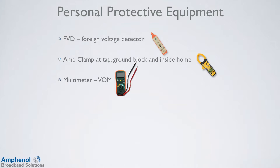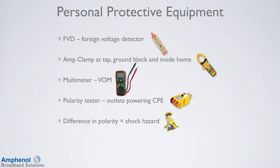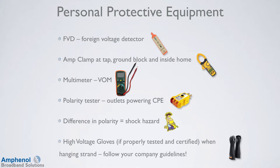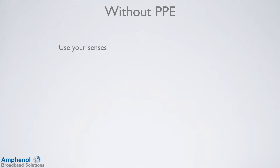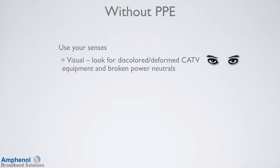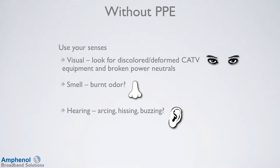A polarity tester can be used at outlets before plugging in CPE to ensure the outlet is wired correctly and there is no difference in potential which can cause a shock hazard. High voltage gloves, if properly tested and certified, can be used when hanging strand. High voltage gloves give a false sense of safety — unless you are sure they are good, never touch a power utility wire with them, as many primary lines are above the rating of a high voltage glove. Always follow your company's safety policy. When inspecting your wires, always pay attention to your senses: visually look for discolored and deformed cable TV equipment and broken power neutrals; smell for burnt odors; listen for arcing, hissing, and buzzing.